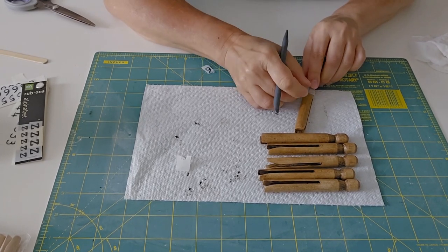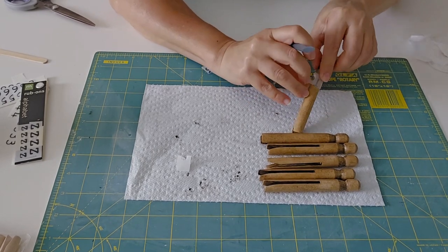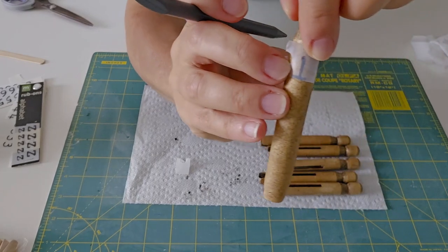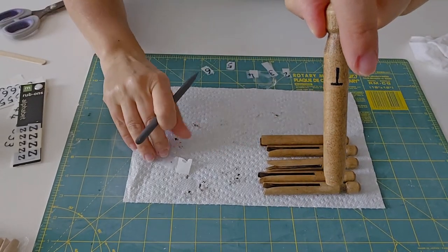And then you're just rubbing it and it's transferring onto the wood. You can see the paper will go cloudy when it's been transferred and there it is.